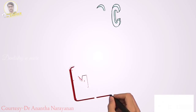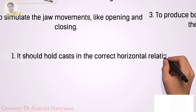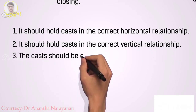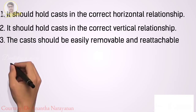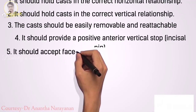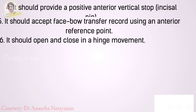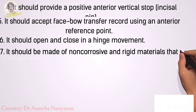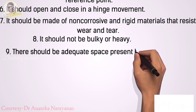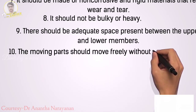The requirements can be classified as basic/minimum requirements and additional requirements. The basic requirements are: it should hold casts in the correct horizontal relationship; it should hold casts in the correct vertical relationship; the casts should be easily removable and reattachable; it should provide a positive anterior vertical stop — the incisal pin; it should accept face bow transfer record using an anterior reference point; it should open and close in a hinge movement; it should be made of non-corrosive and rigid materials that resist wear and tear; it should not be bulky or heavy; there should be adequate space between upper and lower members; and the moving parts should move freely without any friction.